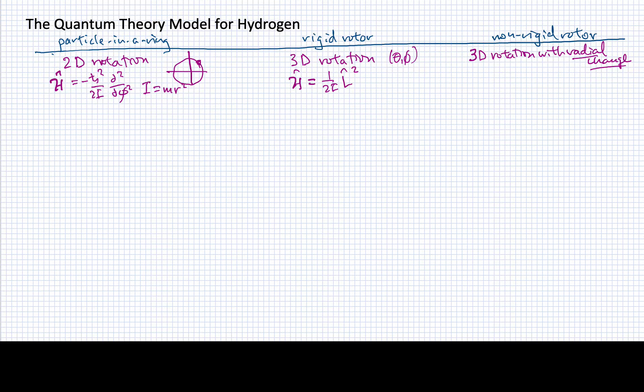Now our moment of inertia was the reduced mass of those two particles in the rigid rotor times their radius squared.